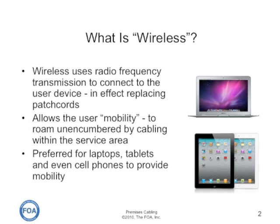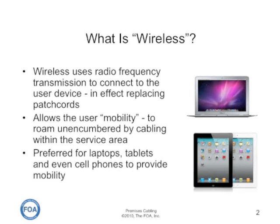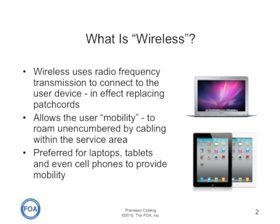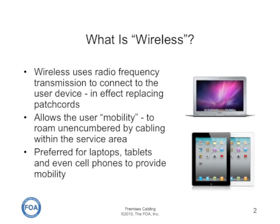Wireless uses radio frequency transmission to connect directly to the user device, which is in effect simply replacing patch cords. Wireless is preferred for mobility — it allows the user to roam unencumbered by cabling within the service area. Wireless is preferred by users of many devices today, including laptops, tablets, and even Wi-Fi as used for cell phones within a premises to provide mobility.